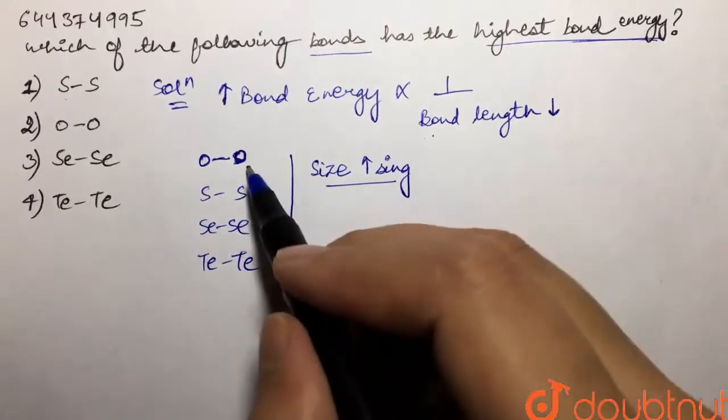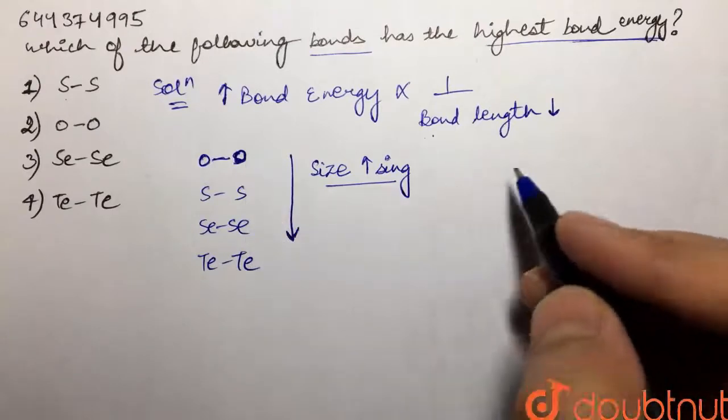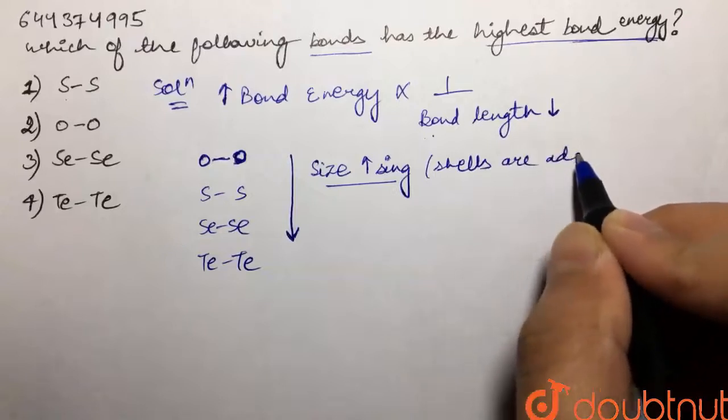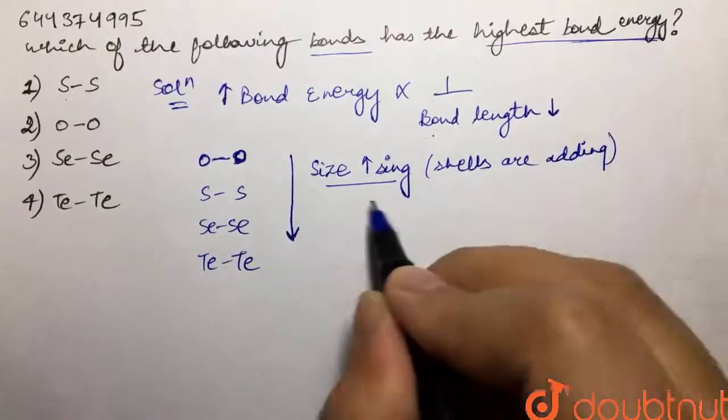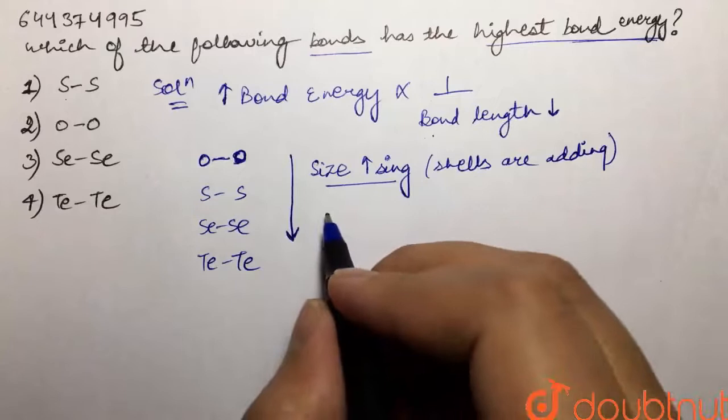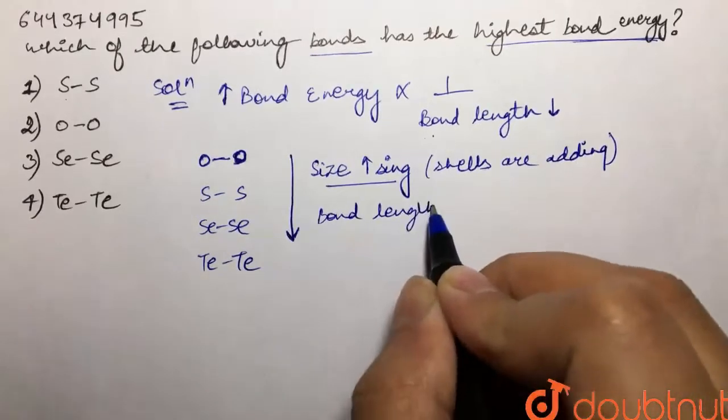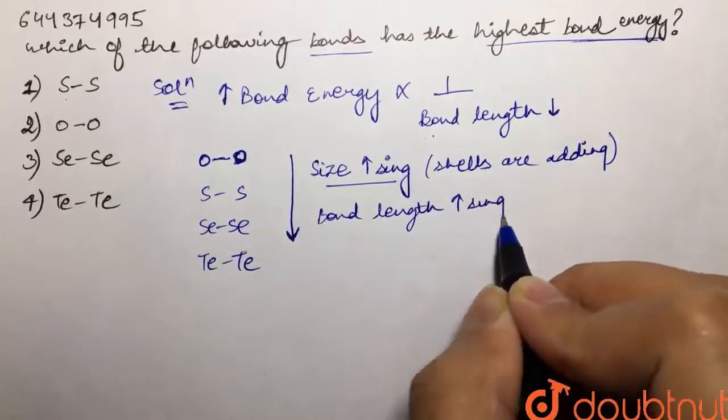Why? Because when we are moving from oxygen to tellurium, the shells are added. Shells are adding, so the size is increasing. Now because the size is increasing, the bond length would also increase. Bond length is also increasing.